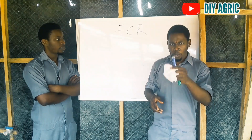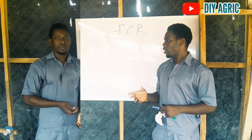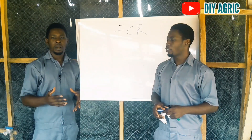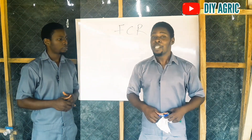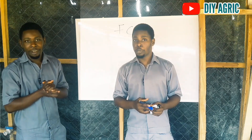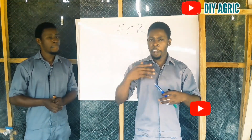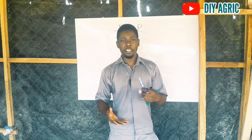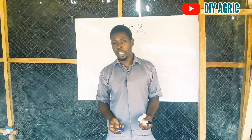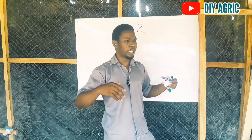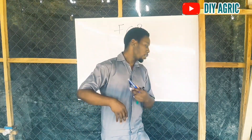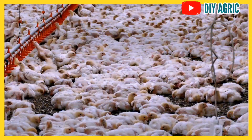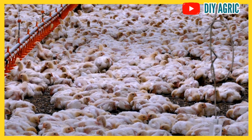So what is FCR? FCR is your Feed Conversion Ratio. It is a factor of how well your birds have been able to utilize their feed and convert it into meat. I call broilers meat-making machines — their whole job on your farm is just to eat feed, convert it into meat, and give you body weight. So FCR measures how well your birds have utilized all the feed you have given them.